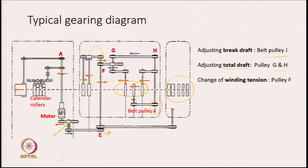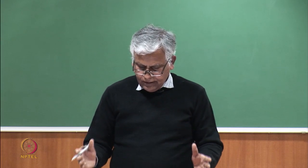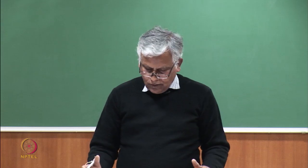Look at pulleys G and H. These 2 pulleys can be changed in terms of their diameter, and by this we will be able to change the speed of the back roller and the front roller, and as a result the total draft is going to change. If we want to change the winding tension, pulley F is there. By changing the diameter of pulley F, the winding tension can be changed. You have to carefully look at the diagram and see how the motion flows to different elements of the machine and what the various change pulleys are, and what happens when the change pulleys are changed in terms of their diameter.